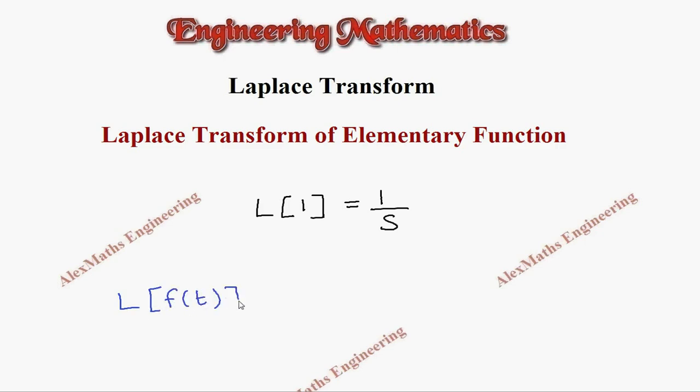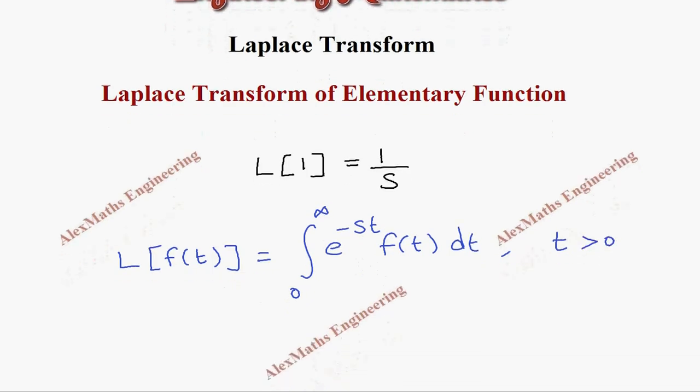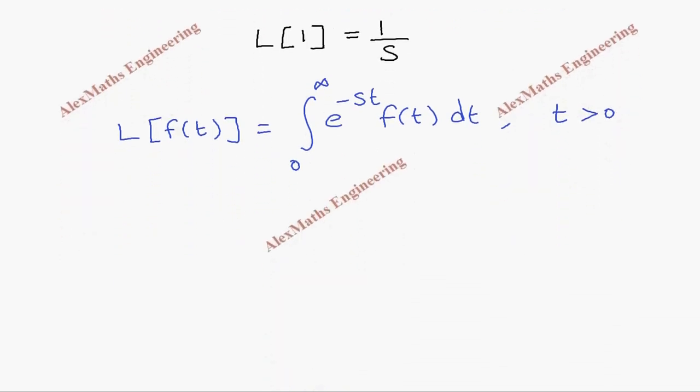integral 0 to infinity e power minus st into f of t dt, where the value of t is positive, which is greater than 0. Now to find the Laplace transform of 1, so here f of t is 1.